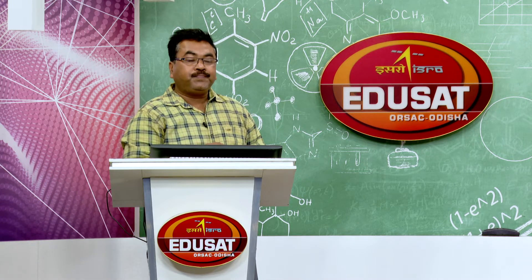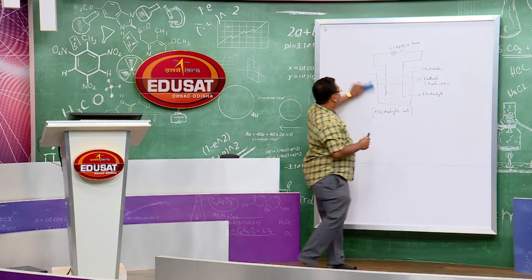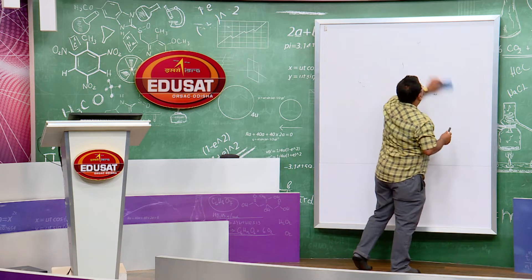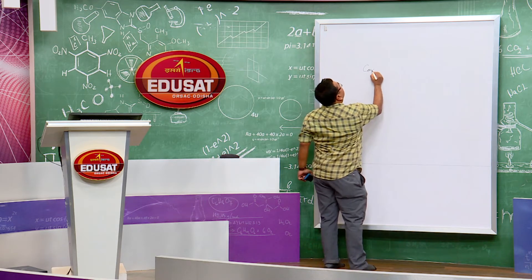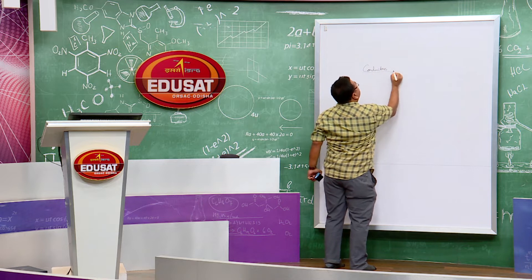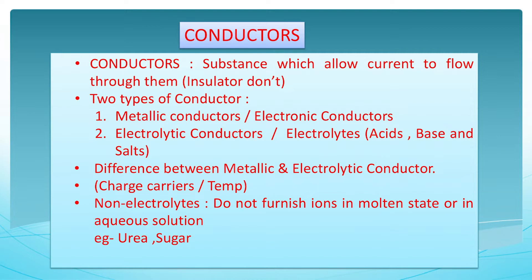Next, we shall discuss conductors. Conductors are substances capable of carrying electricity through them. Substances that do not allow electricity to pass through them are called insulators. For example, a piece of metal is a conductor and a piece of wood is an insulator.